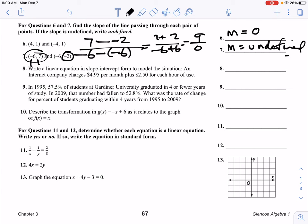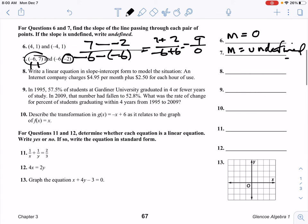Number eight: Write a linear equation in slope-intercept form to model the situation. An internet company charges $4.95 per month plus $2.50 for each hour of use. Whenever you do these types of problems, these real-world problems, your M which is your slope is always going to be your rate, and it's your rate that changes throughout the term. Your rate in this case is going to be the $2.50 for each hour of use.